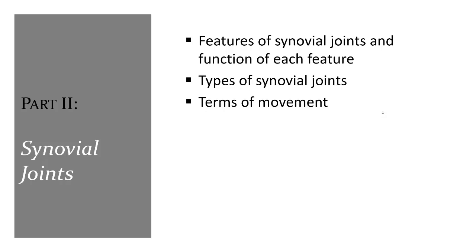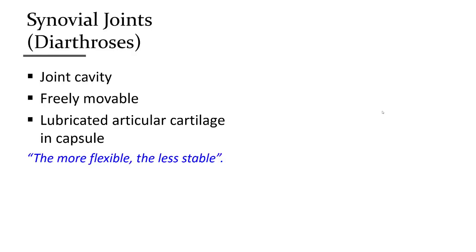Synovial joints are the third group in the functional classification. We will discuss the features and movements of synovial joints. They are contained in a capsule and therefore have a cavity within. These joints are freely movable, although depending on the bony structures their specific movements and range of motion can vary. A rule of thumb: the more flexible or greater range of motion a joint has, the less stable it is — your shoulder versus your hip, for example.